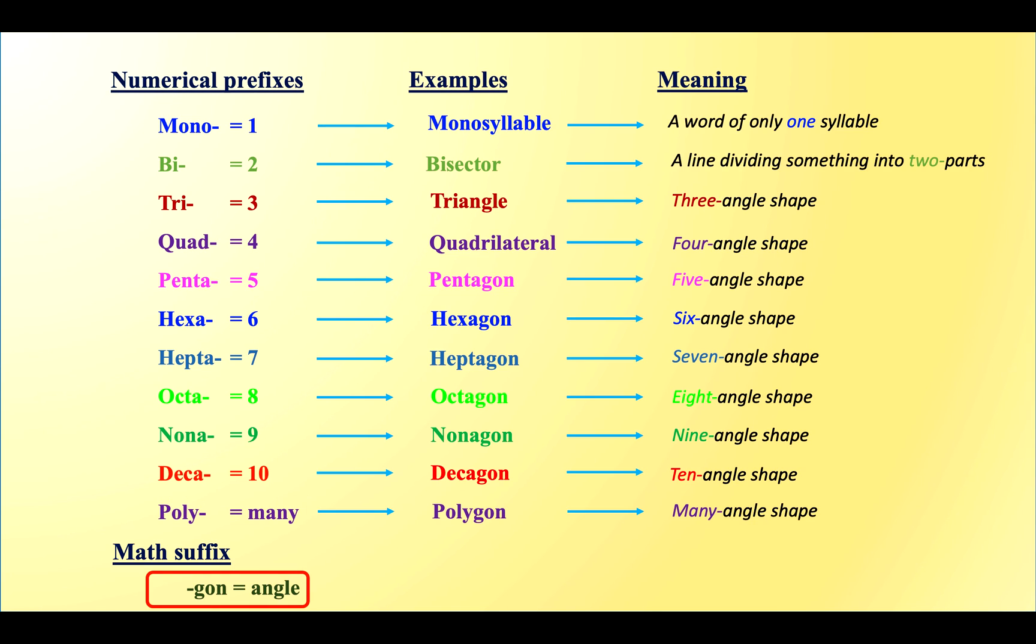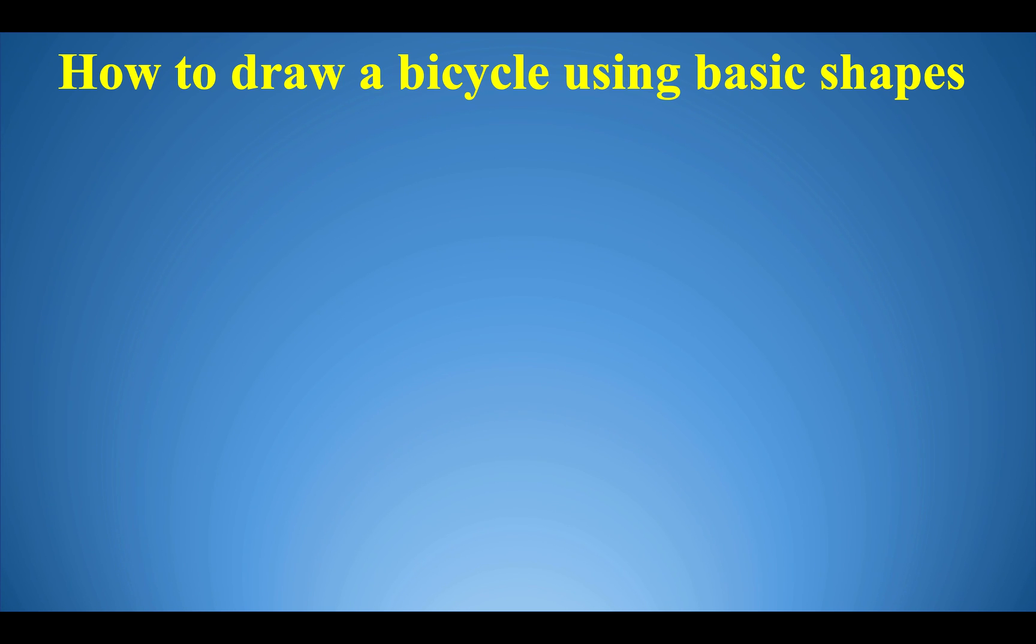Gon means angle. How to draw a bicycle using basic shapes.